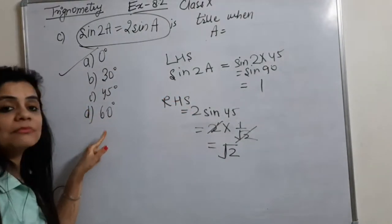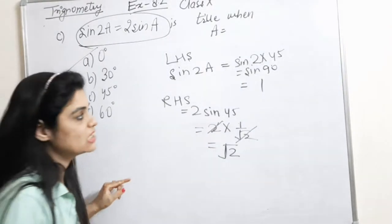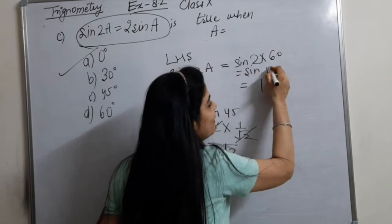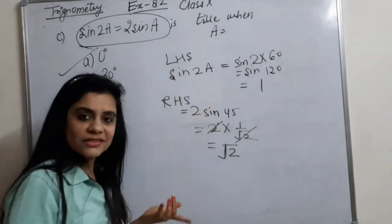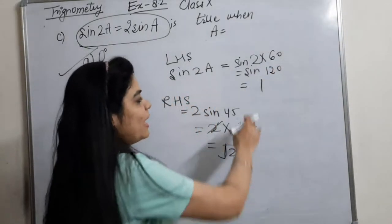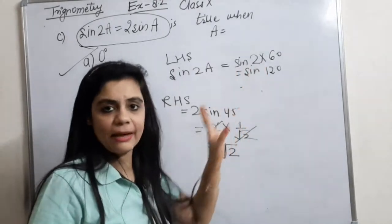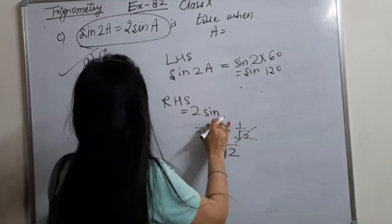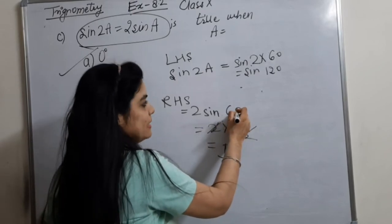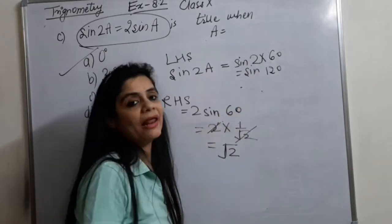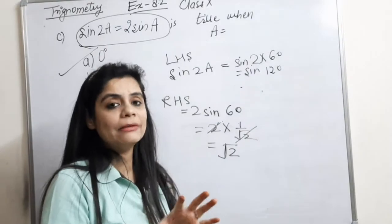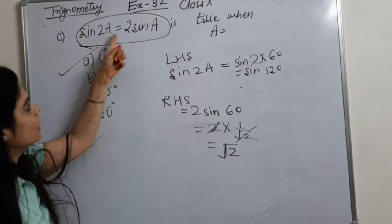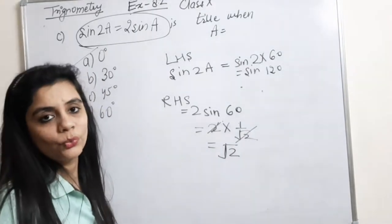Now the last option, 60 degrees: LHS = sin(2×60) = sin 120°. The value of sin 120° is not learned yet. And RHS = 2 sin 60°. These also give not equal. So that means only when A = 0° is this condition true.